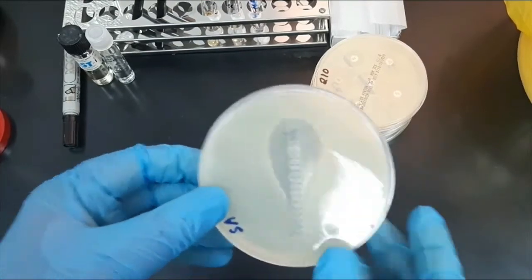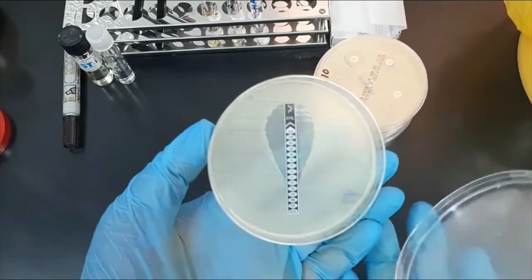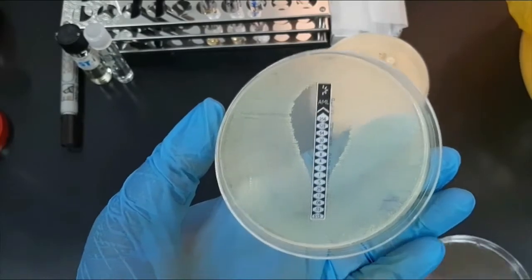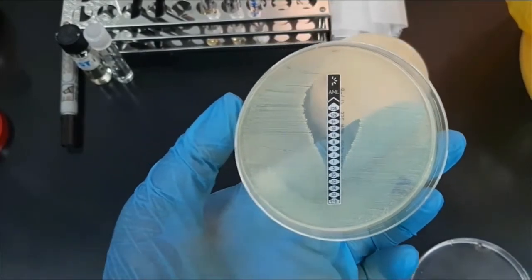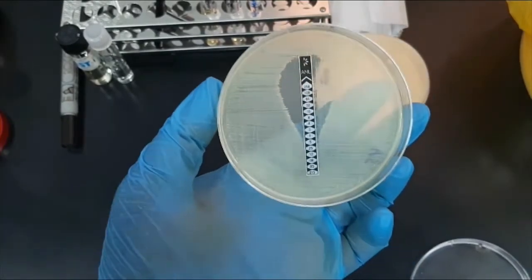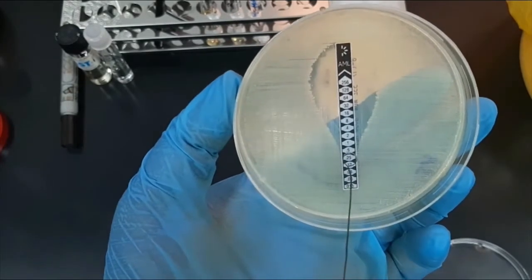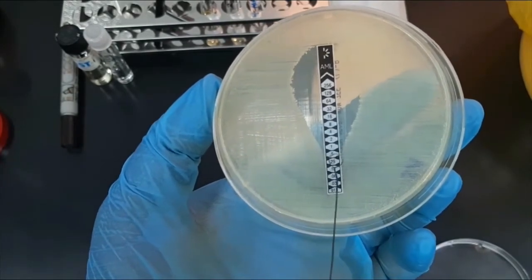After incubation, read the drop-shaped inhibition zone. Read the MIC value at the point where the ellipse intersects the side of the strip. Interpret the MIC reading following the standard guidelines.